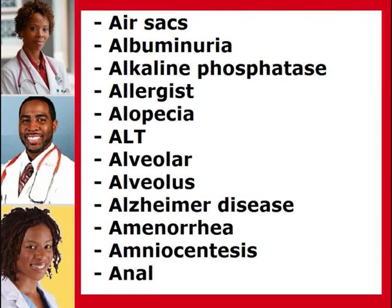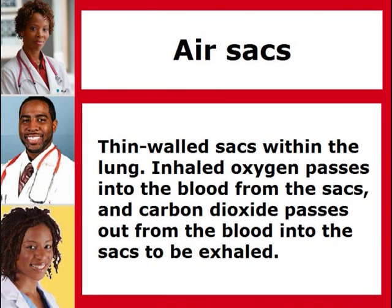Air sacs. Albuminuria. Alkaline phosphatase. Allergist. Alopecia. ALT. Alveolar. Alveolus. Alzheimer disease. Amenorrhea. Amniocentesis. Anal. Air sacs: Thin-walled sacs within the lung. Inhaled oxygen passes into the blood from the sacs and carbon dioxide passes out from the blood into the sacs to be exhaled.